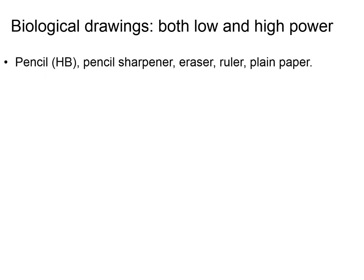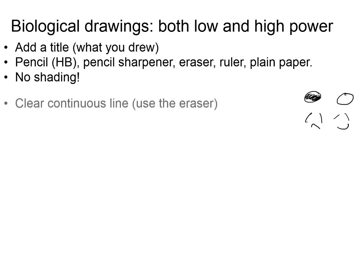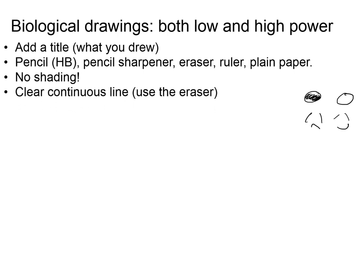Biological drawings — both low and high power. Here is how you do drawings: use a pencil so you can erase. You need to have a title for what you drew. No shading — don't draw the nucleus and shade it in. That's bad; this is good. Use clear, continuous lines. If you're drawing the nucleus and you draw it with a stray line, that's not good because we're trying to communicate very precise structures. Take your time, go slowly, and connect the lines.